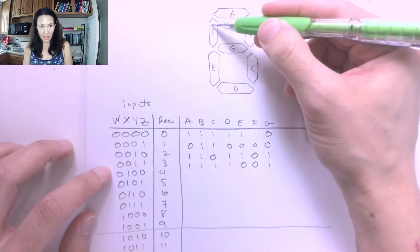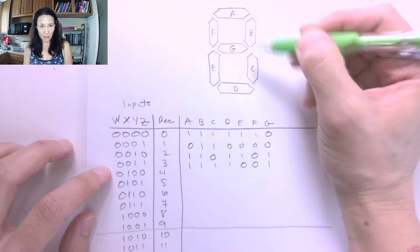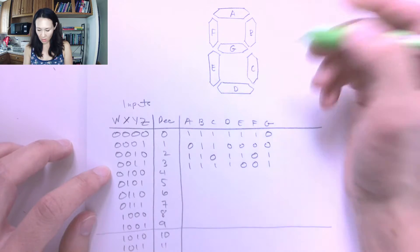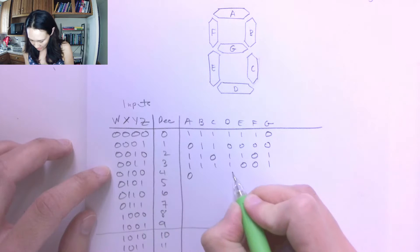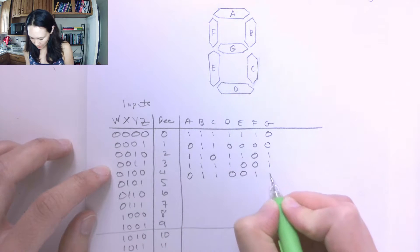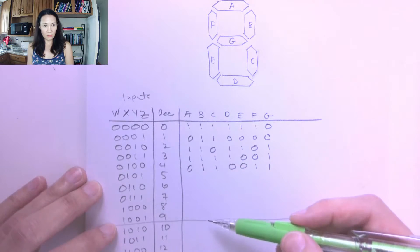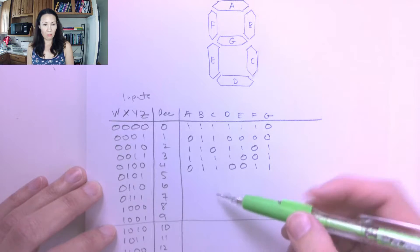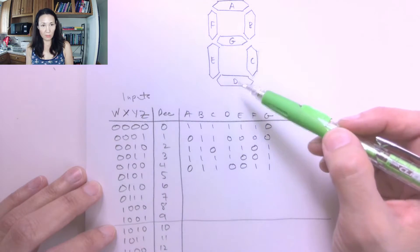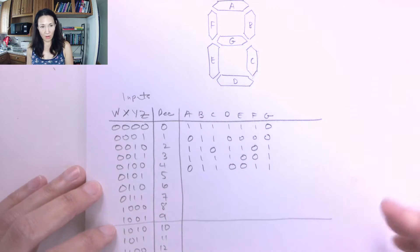Then for 4, I want F, G, B, and C on. I want A, E, and D off. So A, E, and D I want off, and the rest of them I want to be on. So if you can complete the rest of this truth table by visualizing what the number would look like on the seven segment display, then you'll have this first part completed.